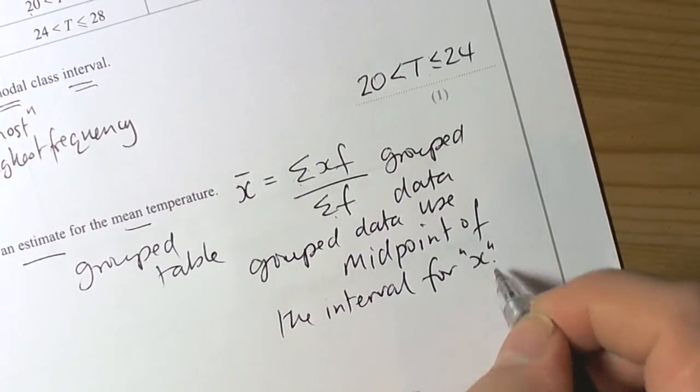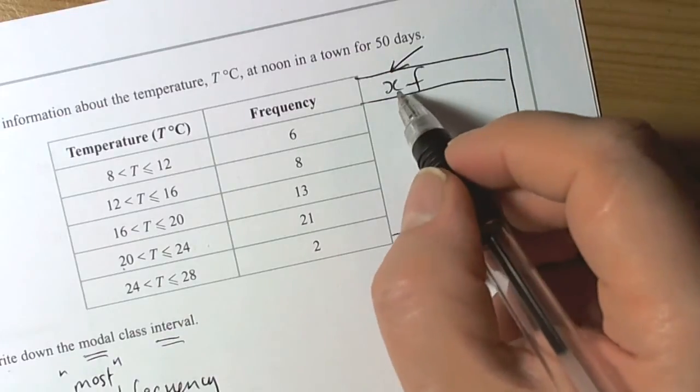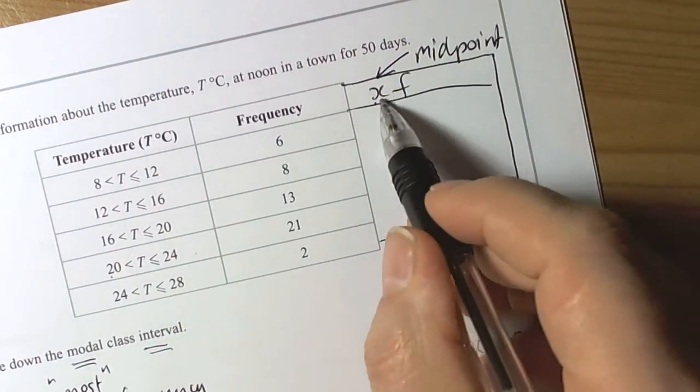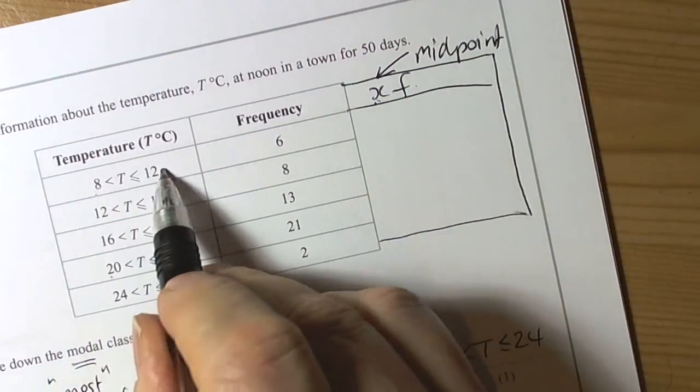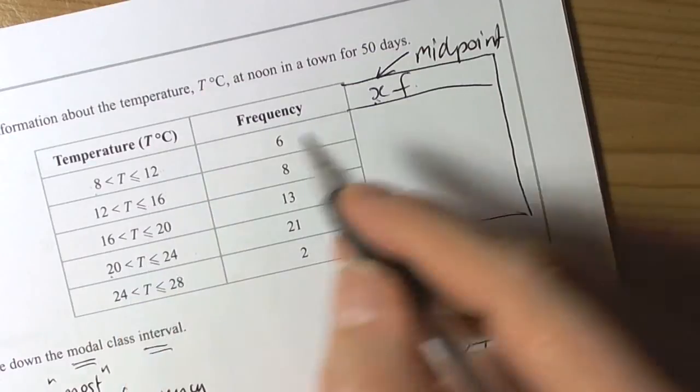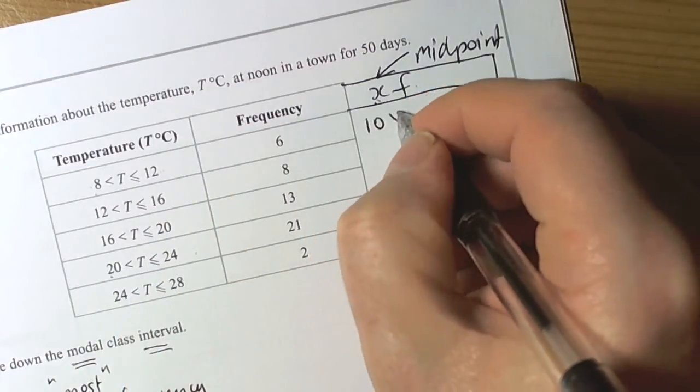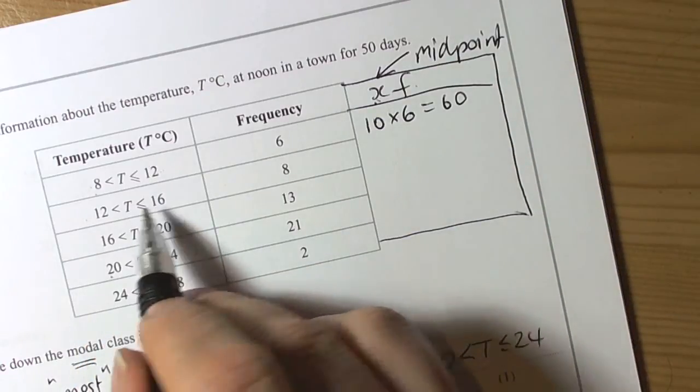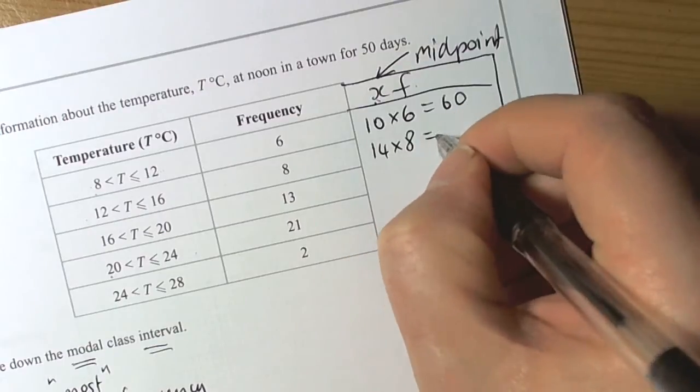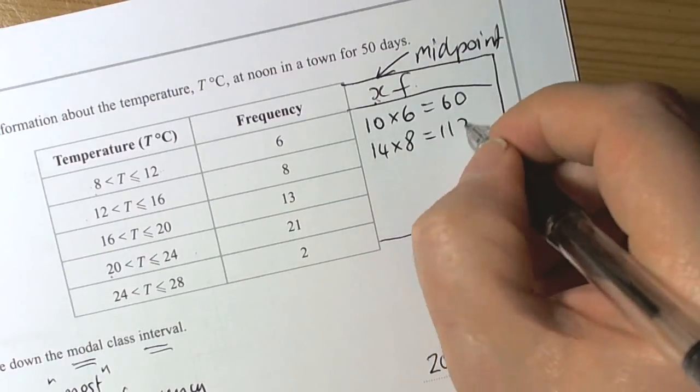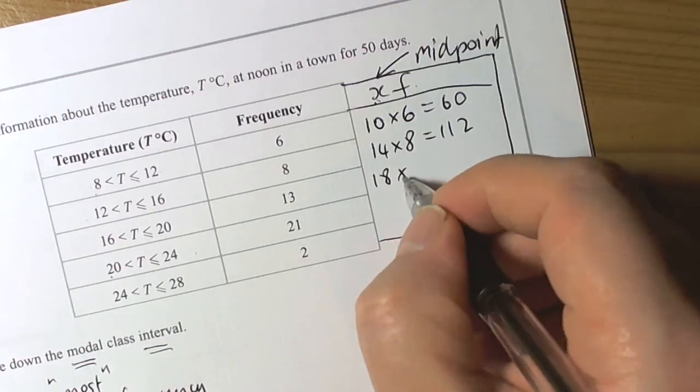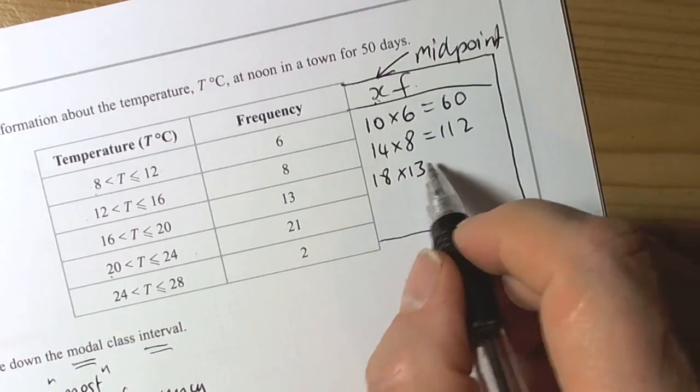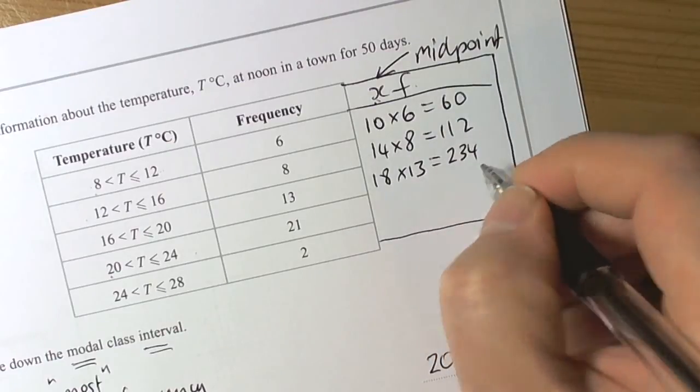So it's telling us to use the midpoint of the interval times the frequency. So the midpoint of 8 and 12, add the two numbers up is 20, half it is 10. So this one we're going to be doing 10 times 6 which is 60. And the middle of this group 12 to 16 is 28, half it is 14, so we're going to be doing 14 times 8, 80, 112. The next group we're going to be doing 18 times 13, so 18 times 10 is 180, 3 times 18 is 54, so that's going to be 234.